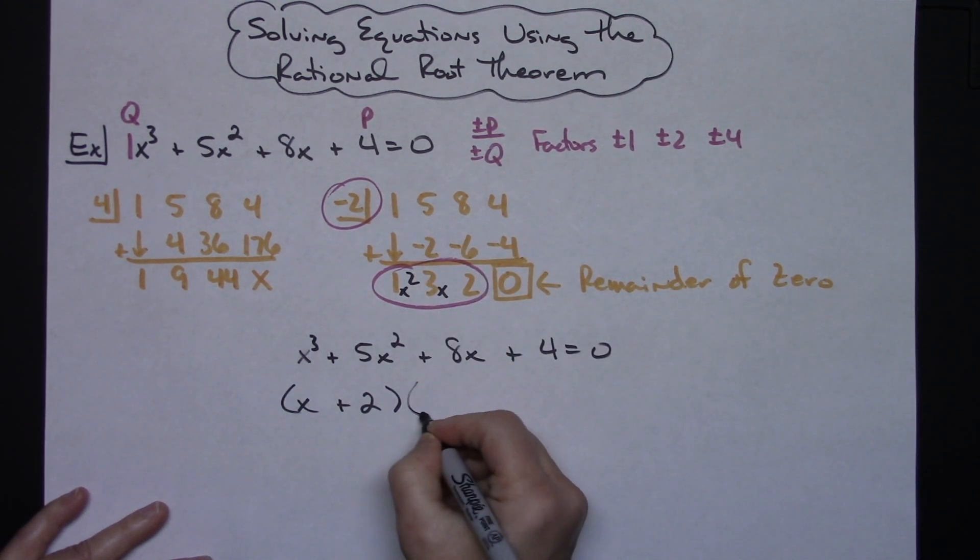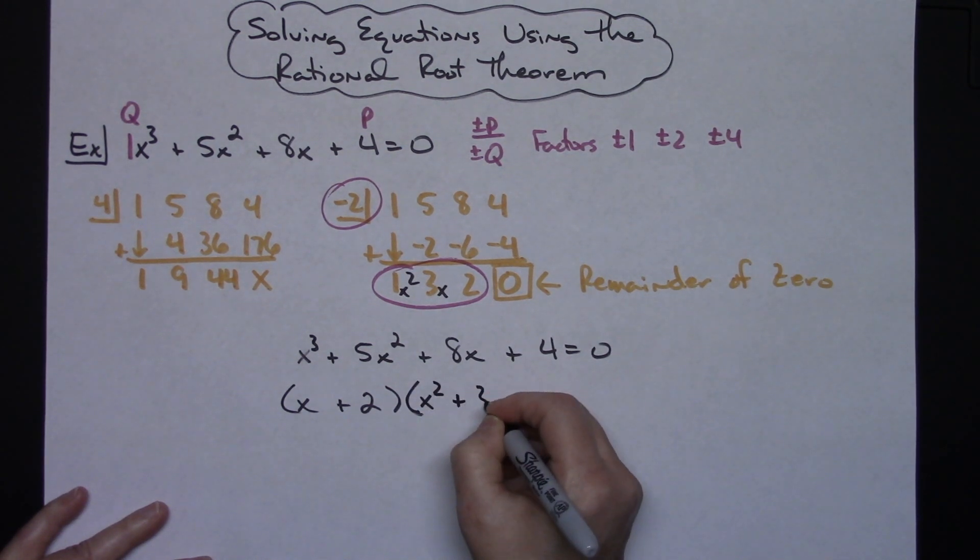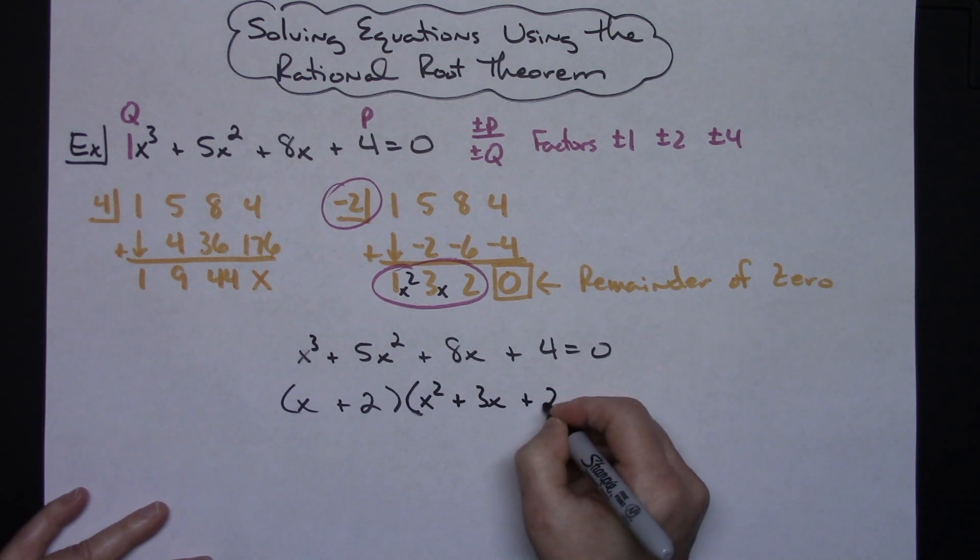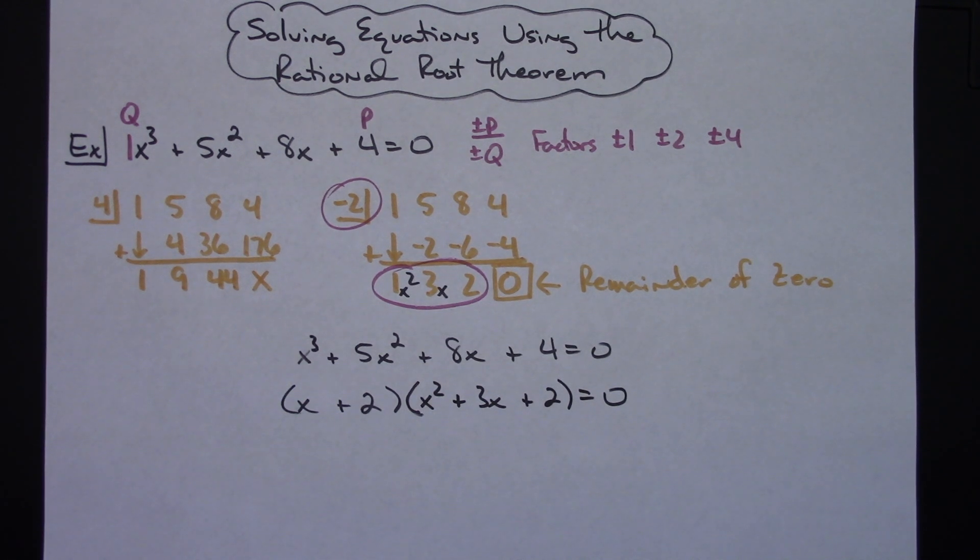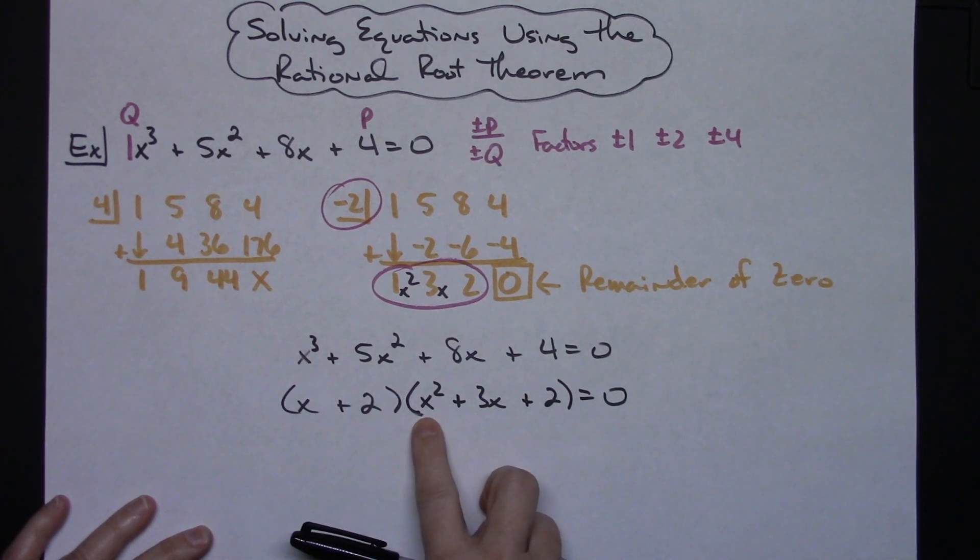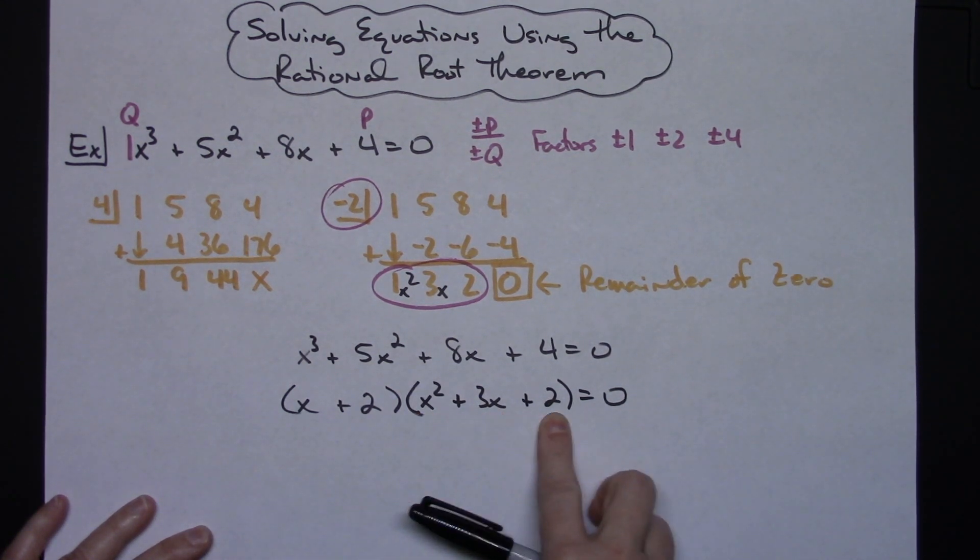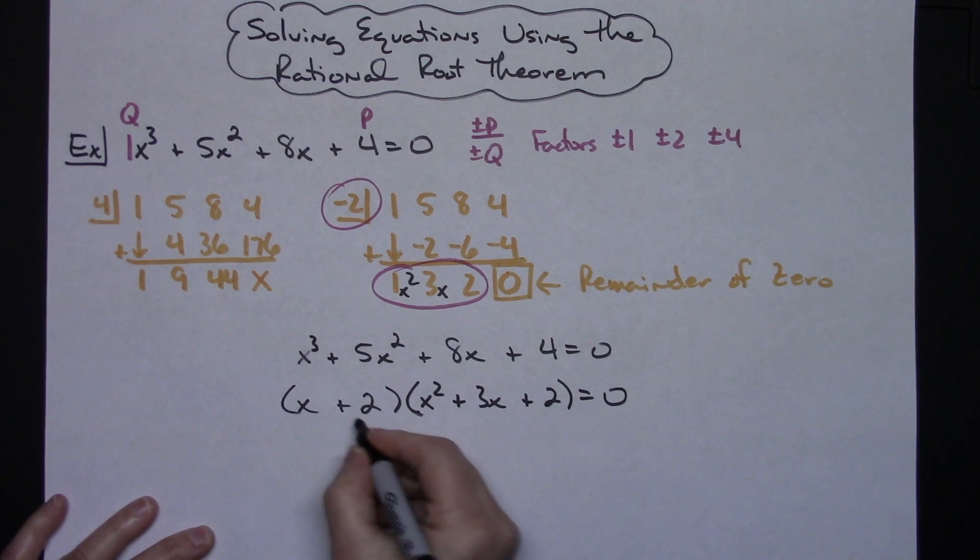From here I can write the trinomial x² + 3x + 2. These two things multiplied together will equal this polynomial of four terms. You could check that by foiling that out and checking. Now this term has already been factored. Hopefully this is going to give you a trinomial that you can factor by hand. This one is going to factor into a two and a one which it is going to work.